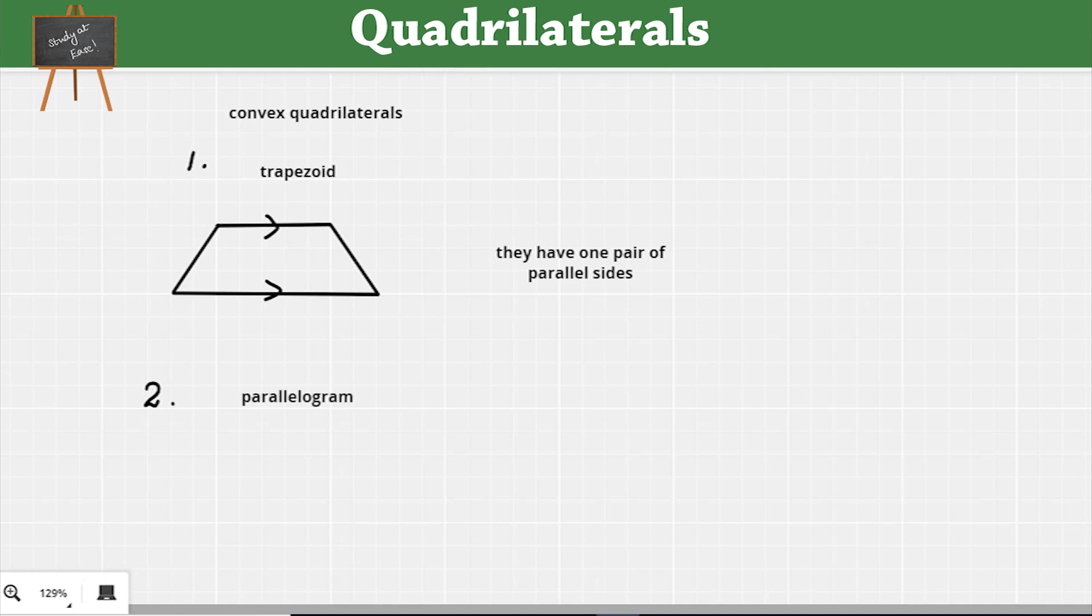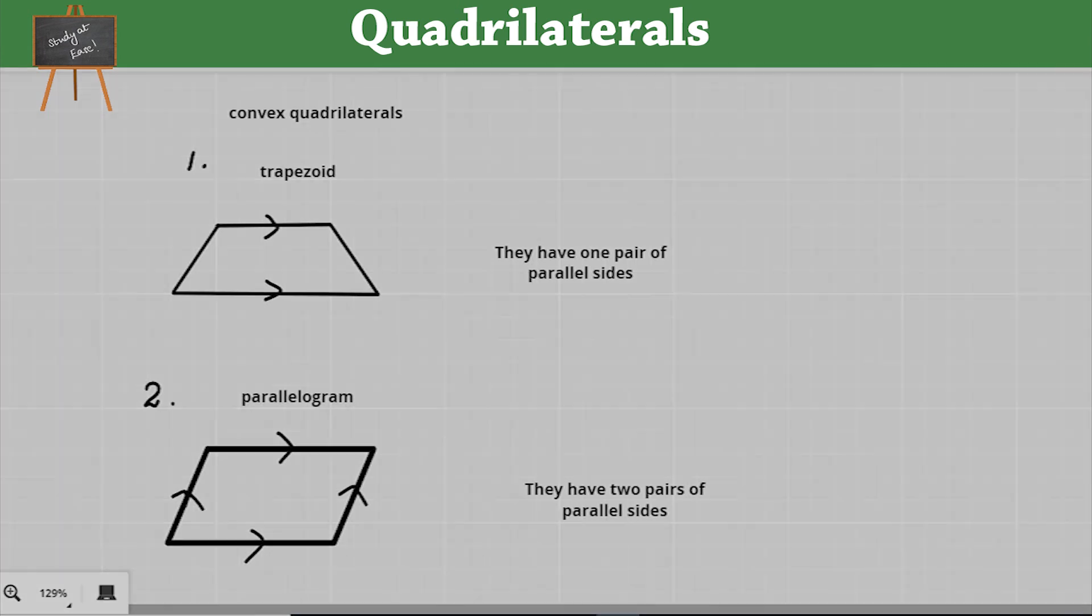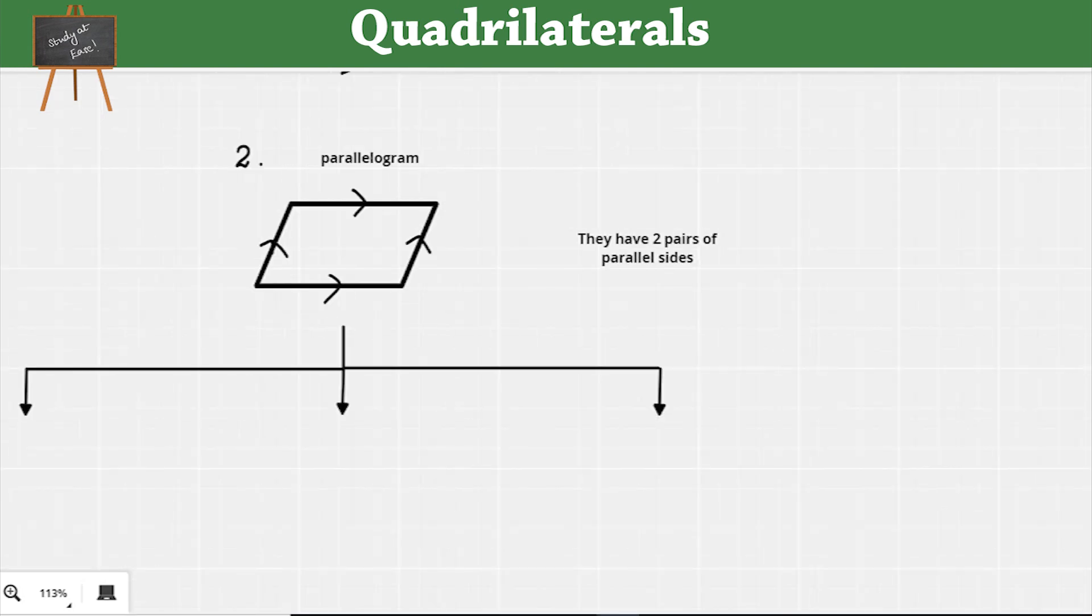Now as the name suggests, in a parallelogram, the opposite sides are parallel. It is indicated by these arrows. Also, the opposite sides are equal too. The parallelogram can be further divided into three types.